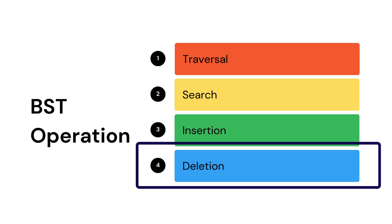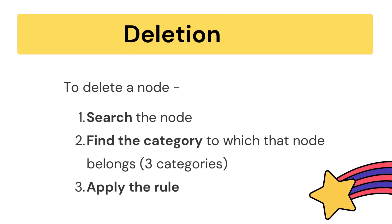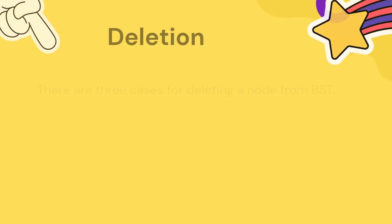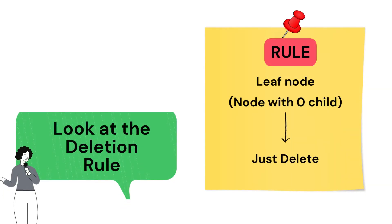In this session, let's learn about how to delete an element in a BST. First, we need to make sure that the node to be deleted is actually present. Once confirmed, we move on to deletion. There are totally three cases for deleting a node from a BST: first, a node with zero children (leaf node) is simply deleted; the other two cases are a node with one child and a node with two children.